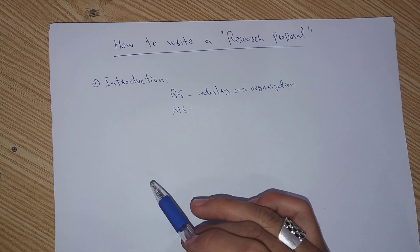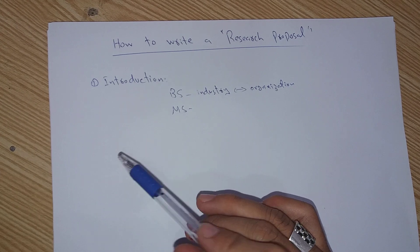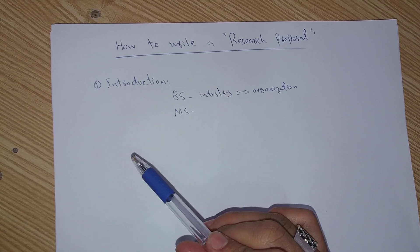So there are some four to five steps, four to five headings which we include here to write a research proposal.